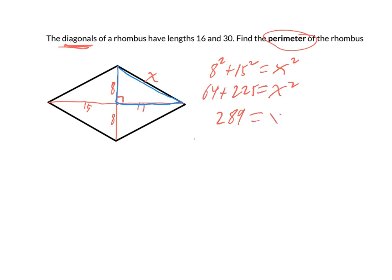289, which is x squared. And then if we take the square root of both sides, we're left with the square root of 289, which is exactly 17. And so each side is 17, but that's not what it asked for—it asked for the perimeter.